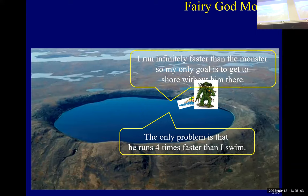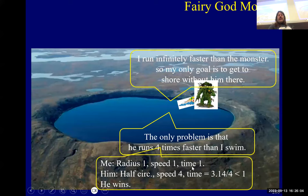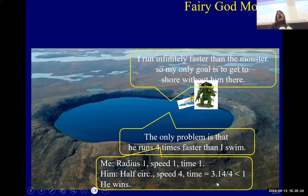The problem is he runs four times faster than you swim. For example, let's assume the circle has radius one — it doesn't really matter because it all scales — and you swim at speed one, so it takes you time one from the center. On the other hand, he only had to run halfway around — a distance of pi — at speed four, and that's less time, so he eats you. Everybody see this?